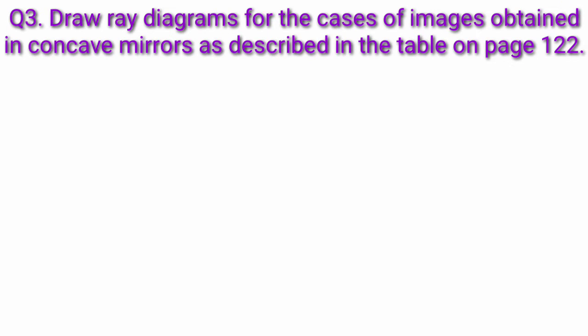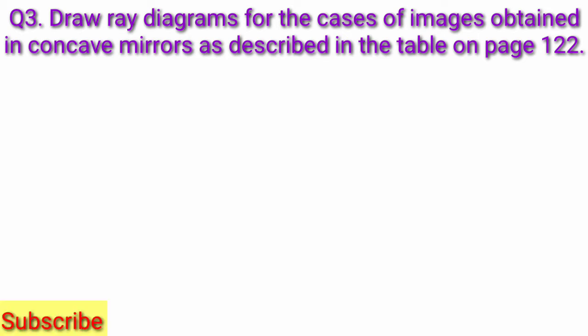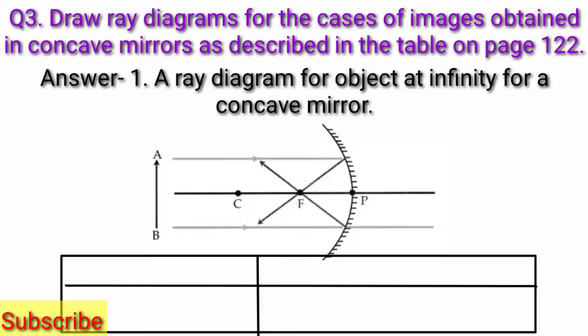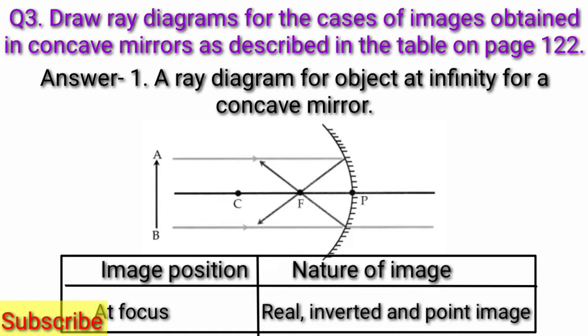Question 3: Draw ray diagrams for the cases of images obtained in a concave mirror as described in the table on page 122. Answer: The ray diagrams are as follows. First, ray diagram for object at infinity for a concave mirror — image position at focus; nature of image: real, inverted and point image.